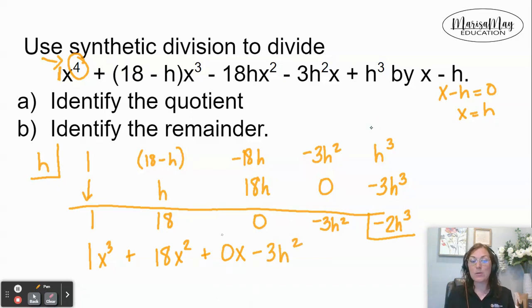This is my quotient. You can write the 0x if you want but you do not have to. I put it there for my example just so you know that I didn't skip something there. So this is my quotient and this negative 2h to the third, that's my remainder. That's why I put the box around it. My remainder here is the negative 2h to the third.